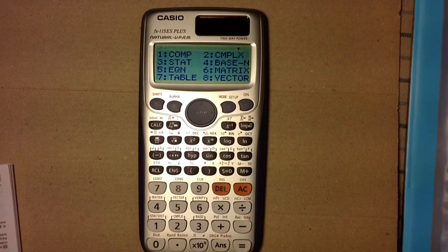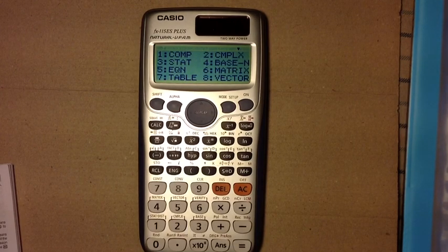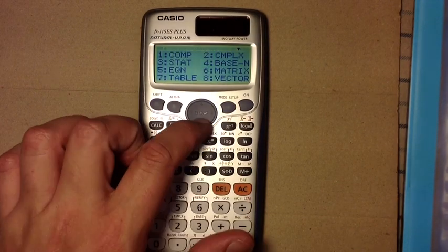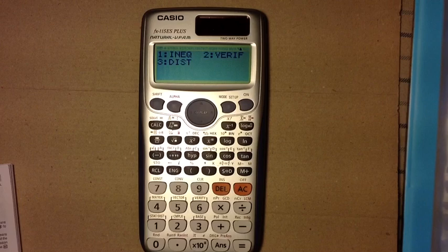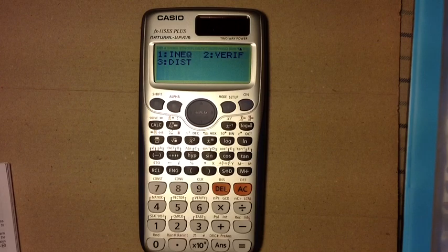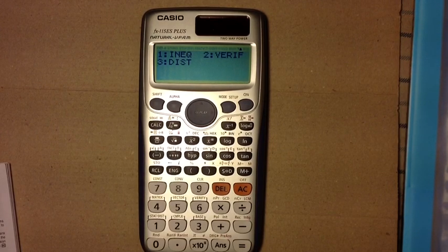If you press the mode key on the FX-115ES plus, you'll get all the options from the classic FX-115ES plus three additional modes. I'll arrow down, and then you will see one for inequality, two for verification, and three for distributions. The third one, I'm really happy that Casio has put this mode in. We'll go over these modes one at a time.